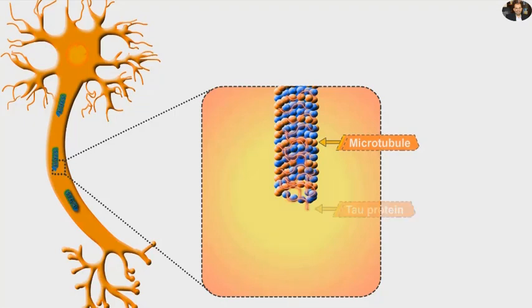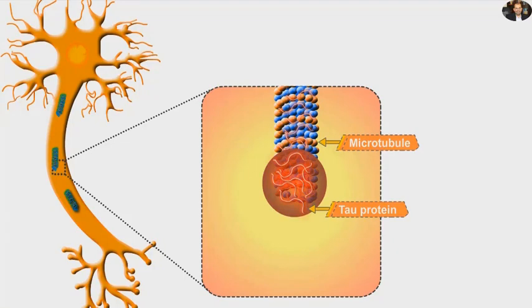In healthy neurons, there is a natural protein called tau protein, which maintains the integrity of cellular microtubules.